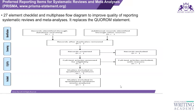The PRISMA flow diagram covers identification, screening, eligibility, and inclusion. You have to write the number of studies identified, the number of records remaining after removing duplicates, the number screened for eligibility, and the number of records excluded from the study, as well as the number of articles fully assessed.